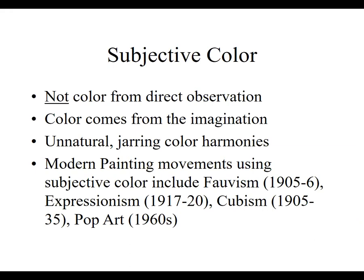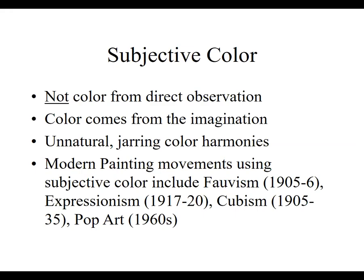I'm characterizing subjective color as unnatural, jarring color harmonies that are different, that you've never seen before, that are off-putting or unexpected. We're going to look at modern painting movements that used subjective color — a very short-lived movement called Fauvism, which only lasted a year or two, 1905 to 1906; Expressionism, 1917 to about 1920; Cubism; and finally Pop Art in the 1960s. All played around with subjective color.